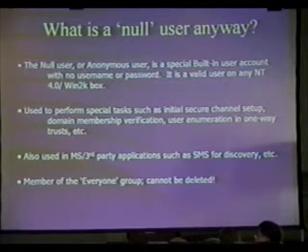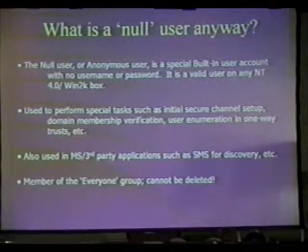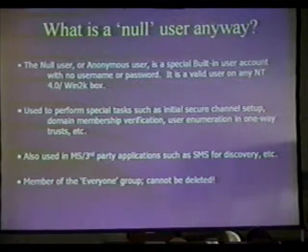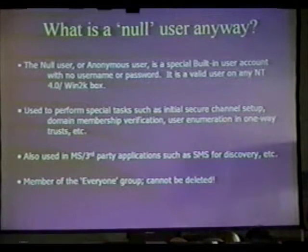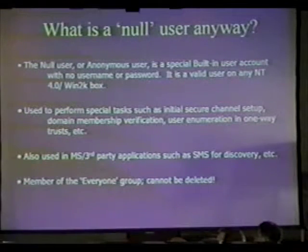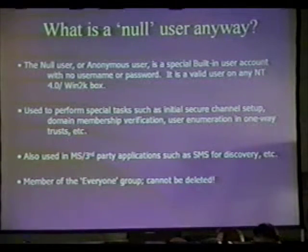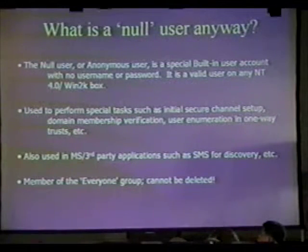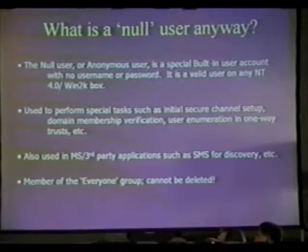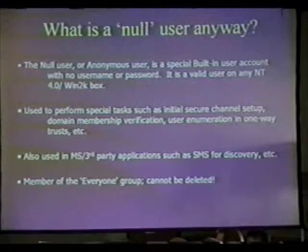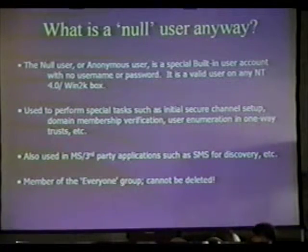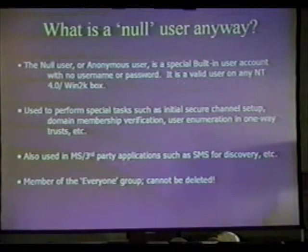Back in the day of NT 4.0, if you had a box that was part of a domain structure, when that machine boots up, it's going to initiate a secure channel on the network, talk to a domain controller and say, 'Am I part of this domain or not?' That connection is established over null credentials initially — no username, no password. If you keep an NT box from using that connection, it will not authenticate. It won't even join the domain. It will say no domain controller was found.